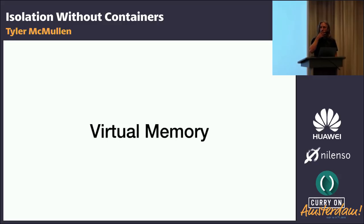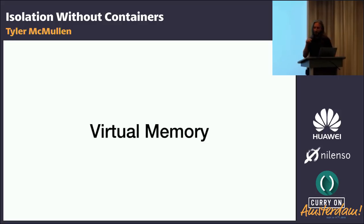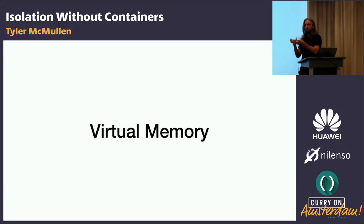MMU is a hardware thing — the memory management unit. VMA is the virtual memory area in the kernel. It's the part of the kernel that deals with the blocks of memory that are mapped into each process. Virtual memory allows us to pretend that each process has its own memory entirely.